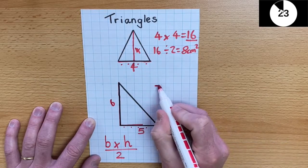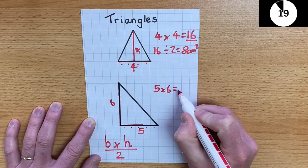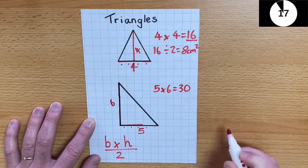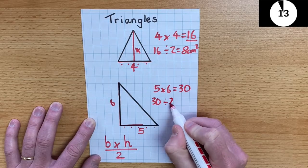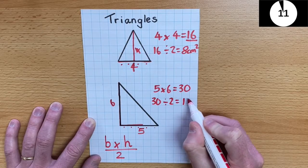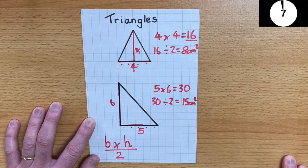So, for this triangle, I would do 5, multiplied by 6, which is 30. And then, 30 divided by 2, which is 15 centimeters squared.